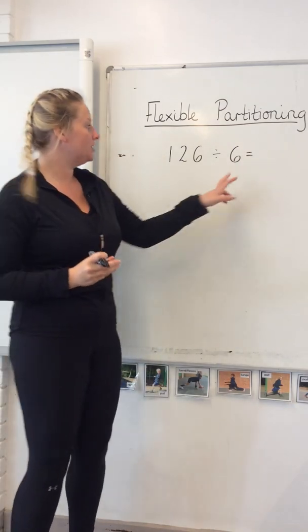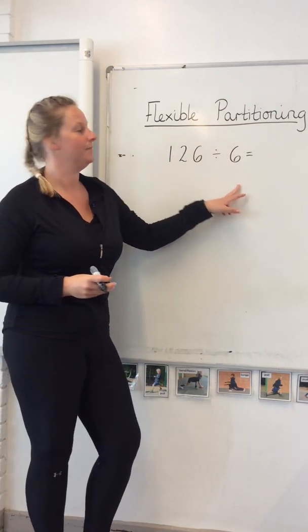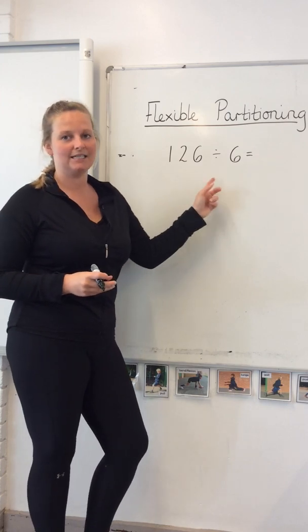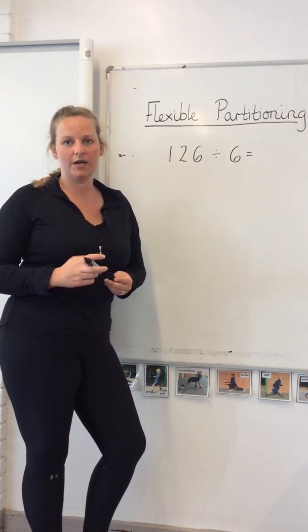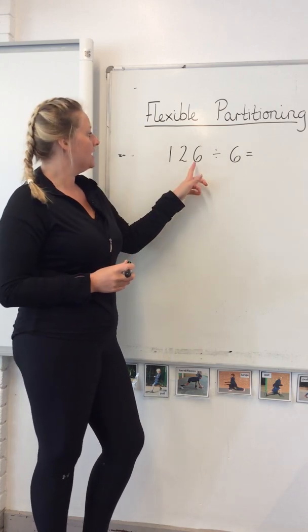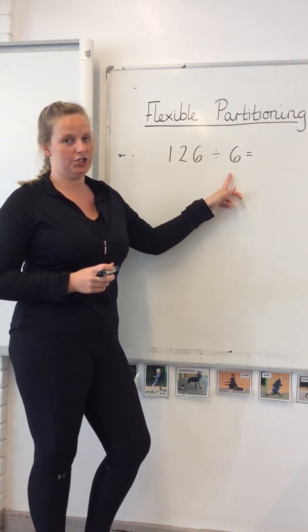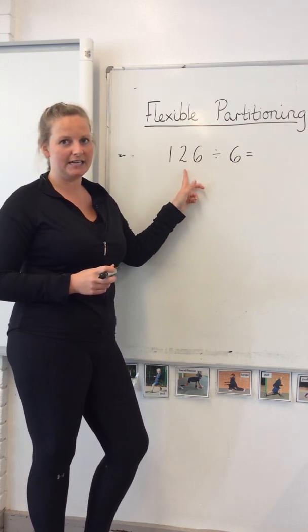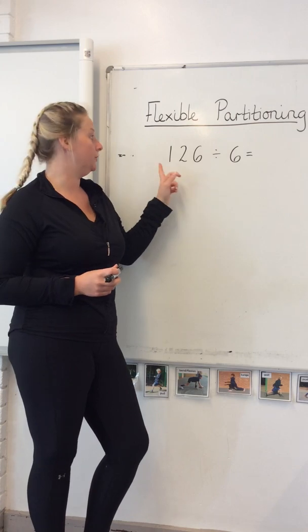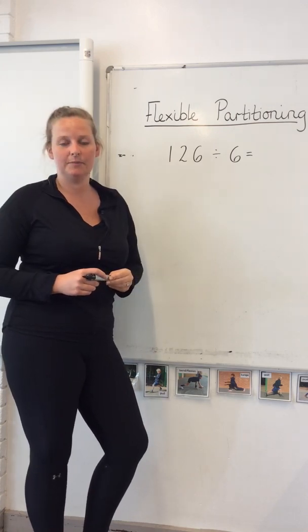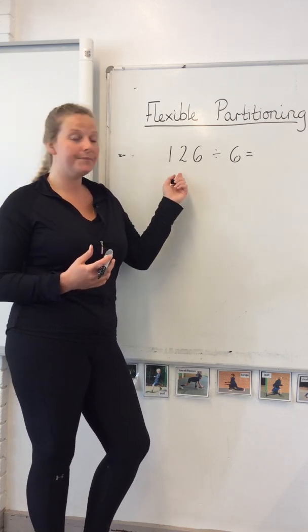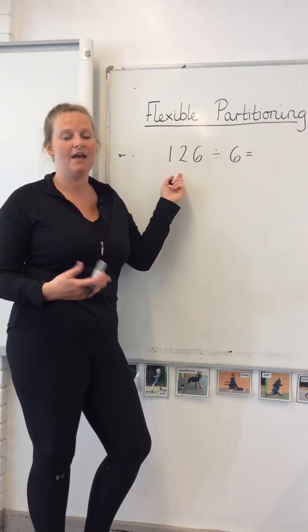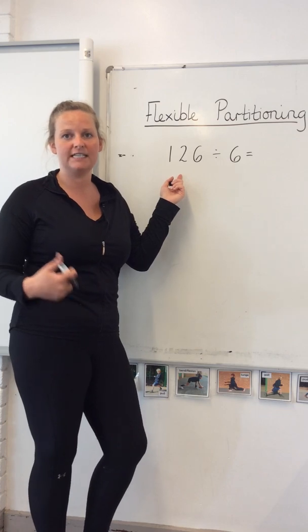I've chosen to divide by 6 this time: 126 divided by 6. Now if we were going to look at the question like we did last time — 6 divided by 6 we can do, but 2 divided by 6 we can't do, and 1 divided by 6 we can't do. So I'm going to use flexible partitioning, meaning I'm going to split the number up in a different way than just hundreds, tens and ones.